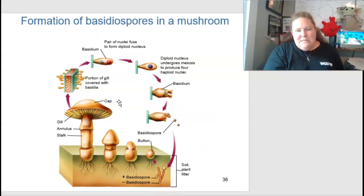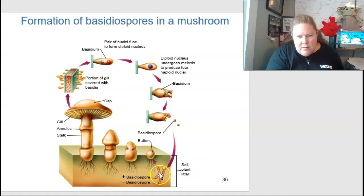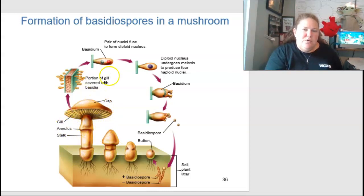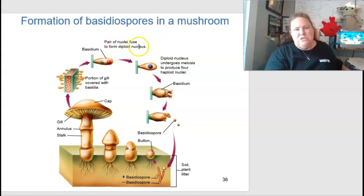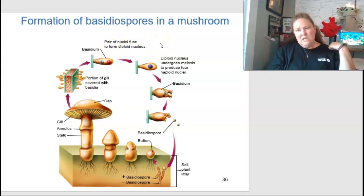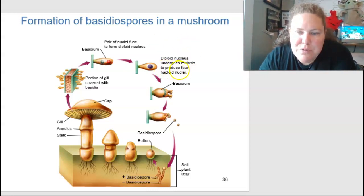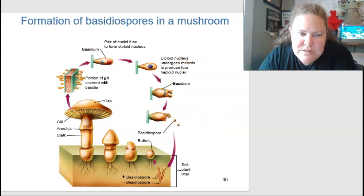In a mushroom, a fertilized spore in the soil forms a button that grows and matures into a cap with gills, a stalk, and an annulus. A portion of the gill is covered with basidia, which fuse to form a diploid nucleus. That diploid nucleus then undergoes meiosis to produce four haploid nuclei, which are released into the atmosphere as spores.